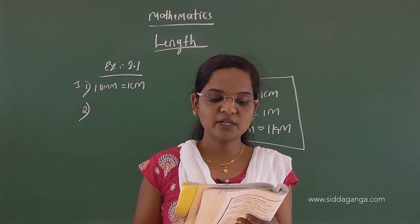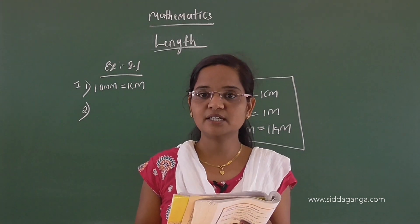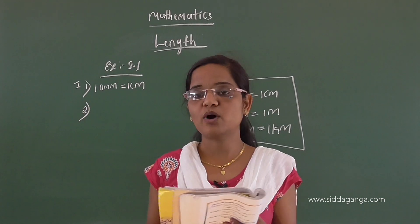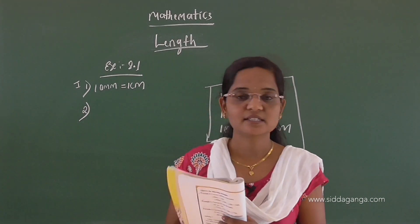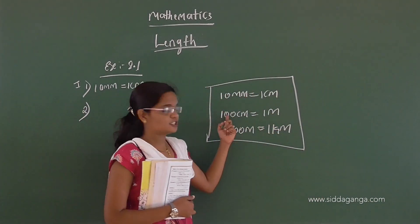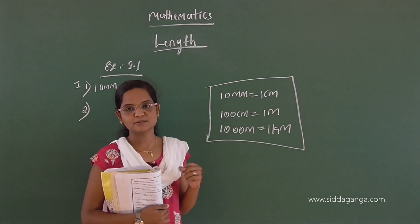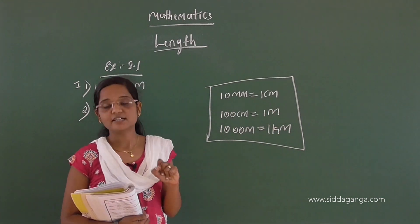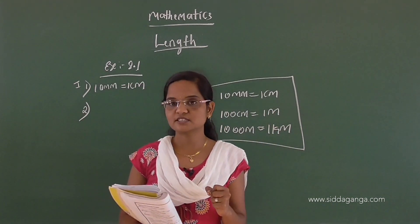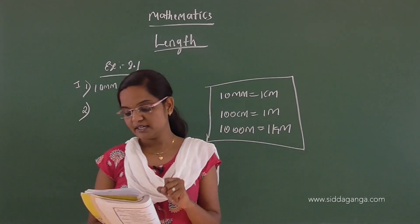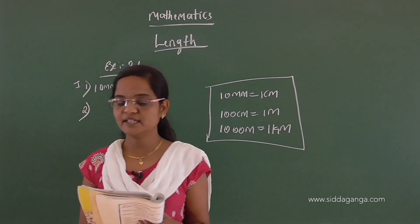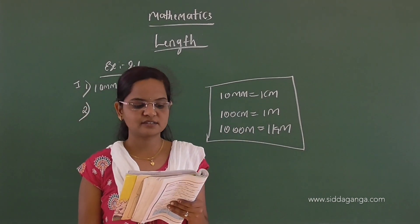Second question: How many centimeters make 1 meter? How many centimeters make 1 meter? 100 centimeters. So here we have the answer: 100 centimeters make 1 meter.